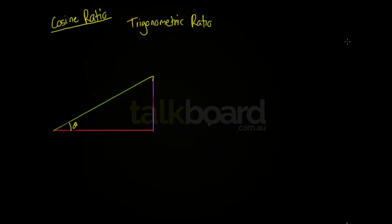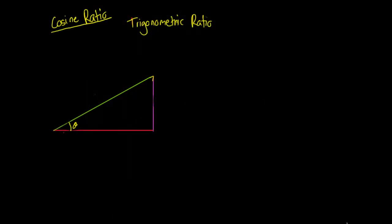Hey guys! So in this video we're going to be looking at the cosine ratio. The cosine ratio is a trigonometric ratio and what it tells us is that if we know our sides — the adjacent and the hypotenuse — then it's going to let us work out our angle theta.